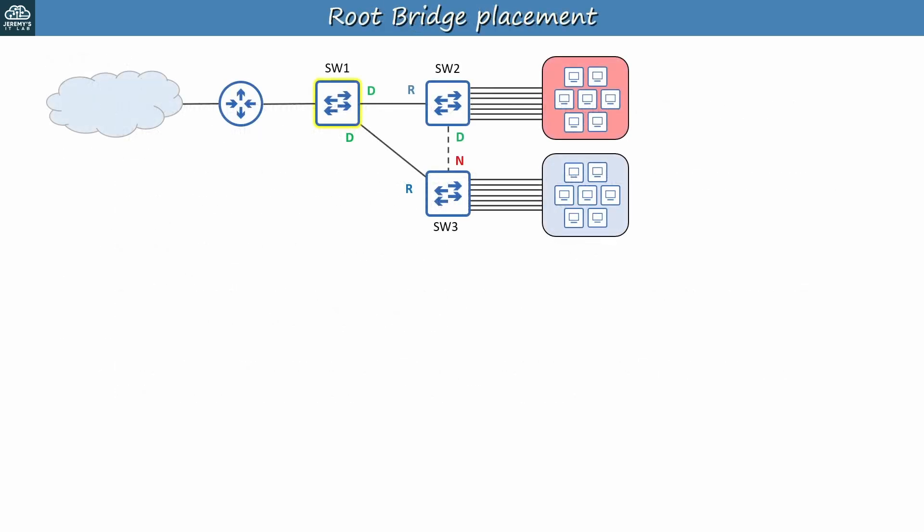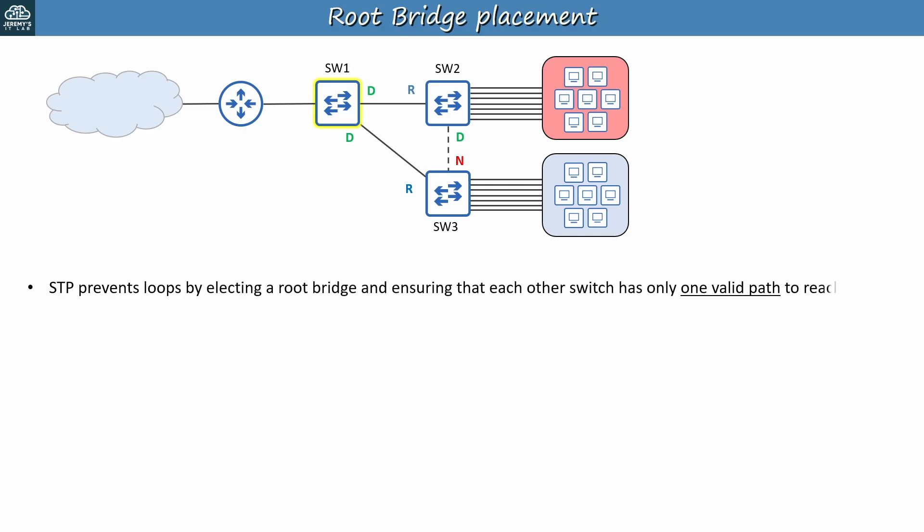So why is it important to ensure that a specific switch remains the root bridge? Before we look at root guard, let's see why it's valuable. As you know, STP prevents loops by electing a root bridge — that's SW1 in the network above — and ensuring that each other switch has only one valid path to reach it. In this network, SW2 has one active path to reach SW1, the direct connection between SW2 and SW1. And same for SW3, only its direct link to SW1 is active. The link between SW2 and SW3 is disabled to prevent loops. Any of these three switches could be the root bridge, and STP would fulfill its role of preventing loops.